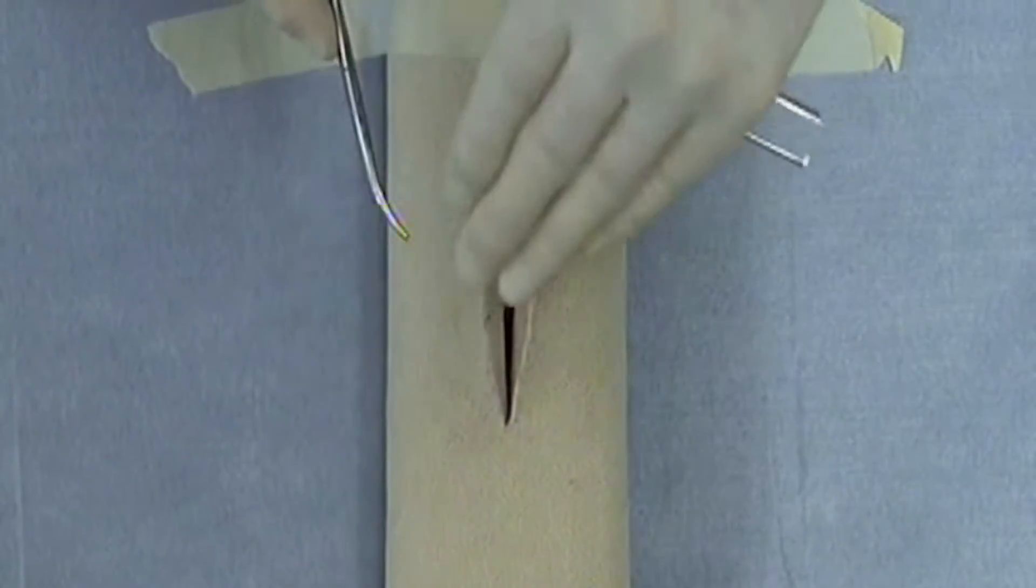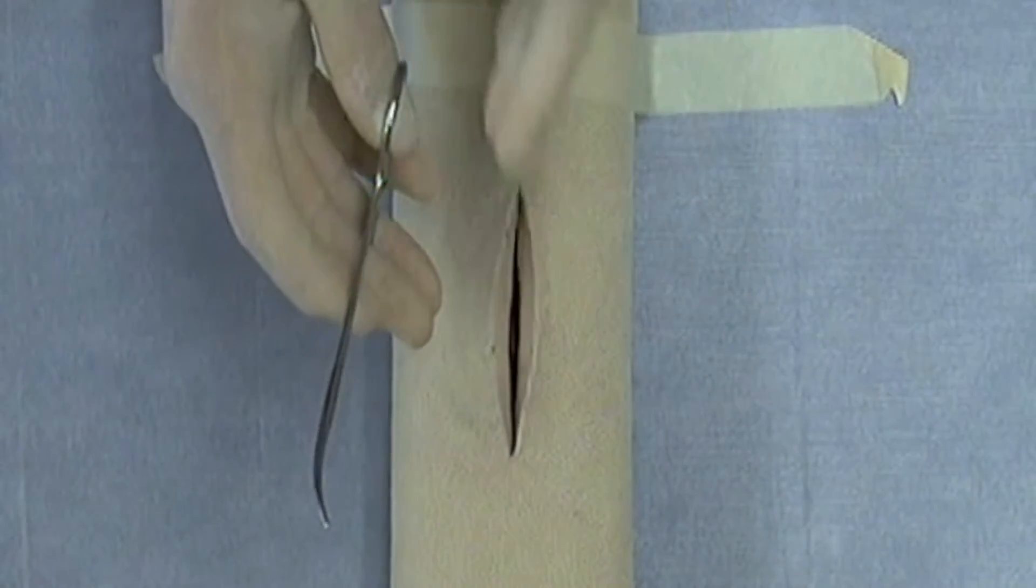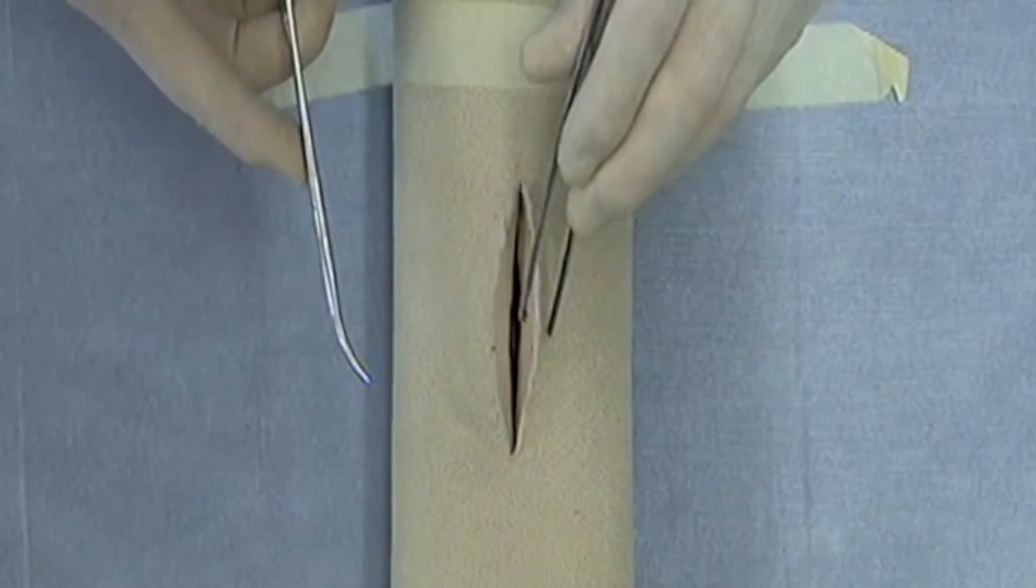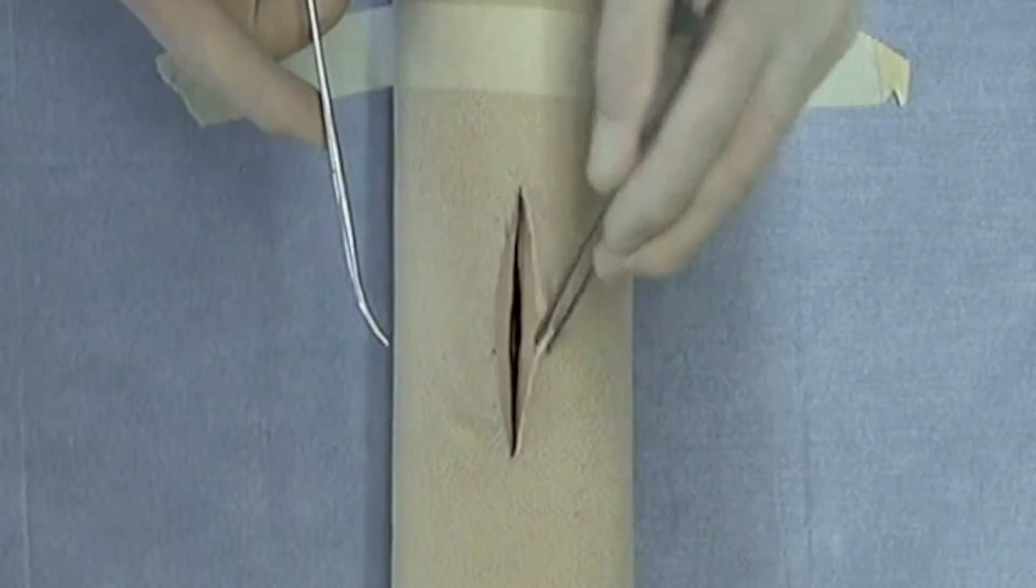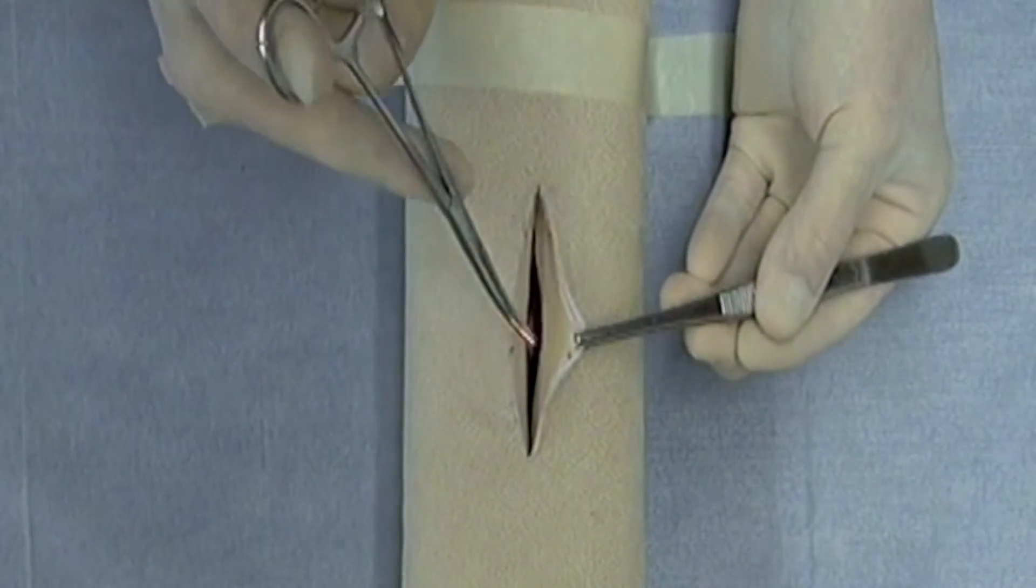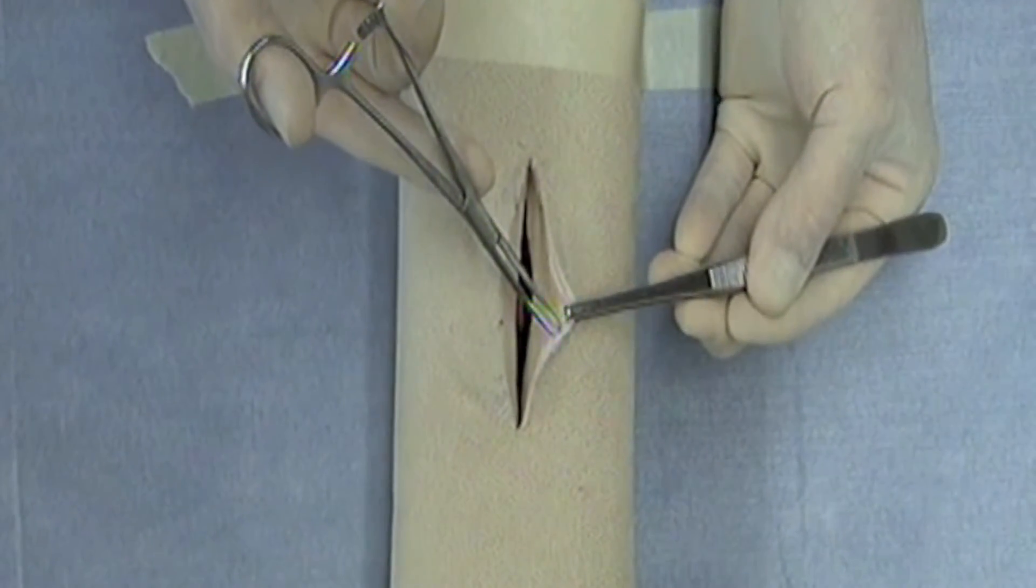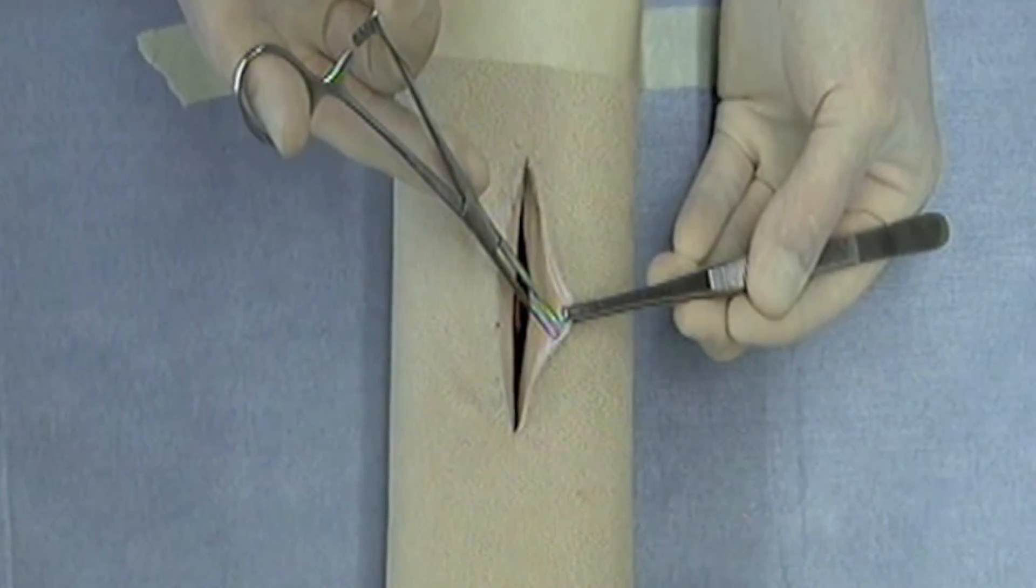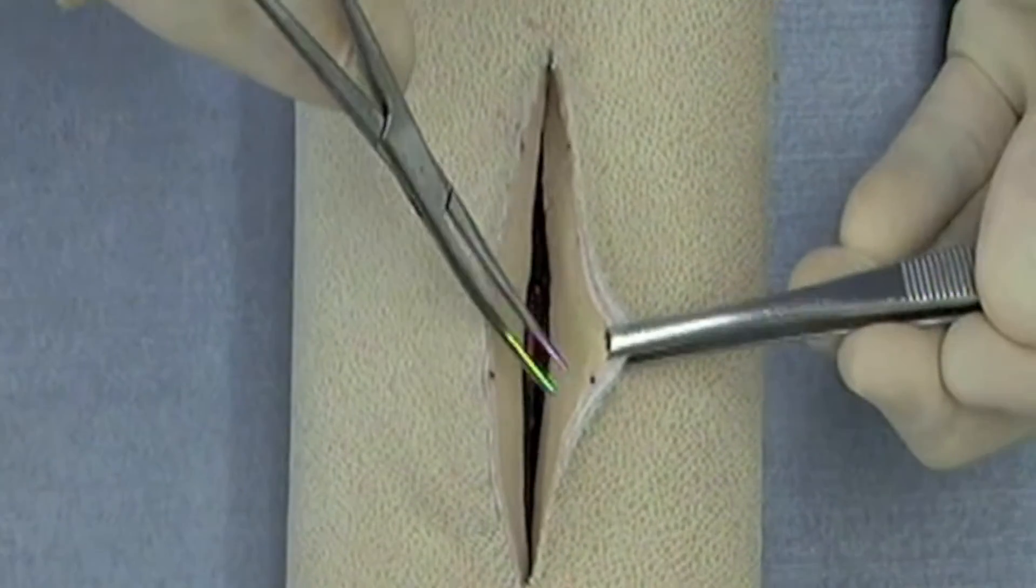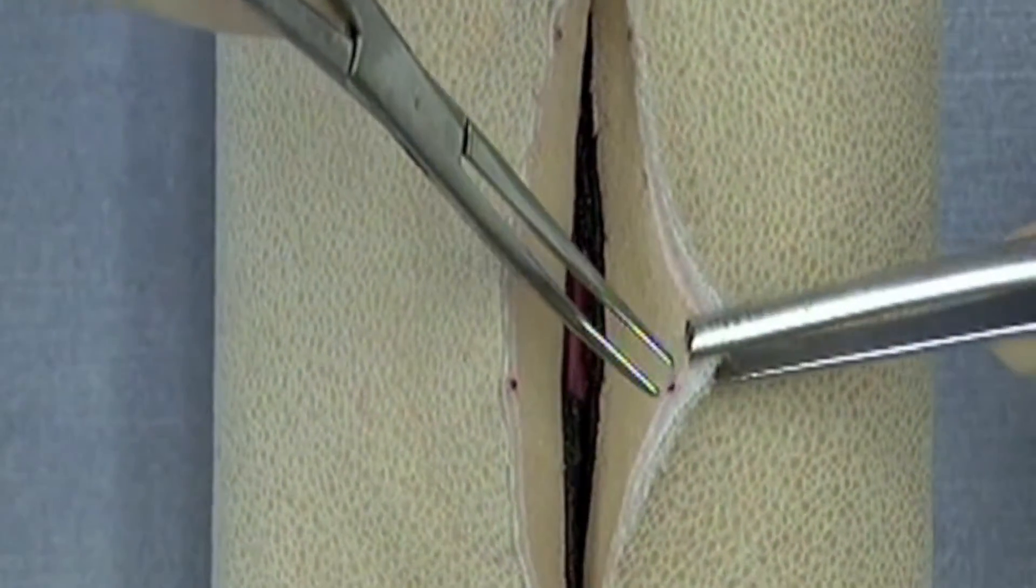The instrument is used with the curve toward my midline, which is right here. In order to properly clamp a vessel, you're going to use your rat tooth forceps, roll the skin edge out, and you're going to actually place the two limbs of the hemostatic forceps down. You press into the tissue and you grab the vessel, which is sometimes easier said than done.